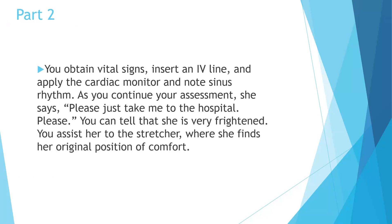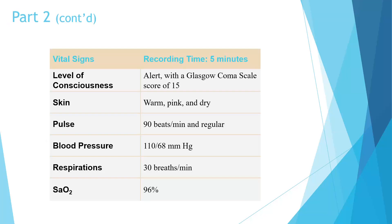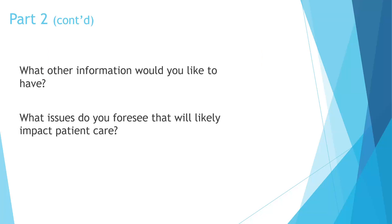We get vital signs, start an IV, apply the cardiac monitor. She's in a sinus rhythm and as you continue your assessment she says 'please just take me to the hospital' — you can tell she's very frightened. Assist her to the stretcher where she finds her position of comfort. Level of consciousness: alert, GCS of 15. Skin: warm, pink and dry. Pulse: 90 beats per minute and regular. Blood pressure: 110 over 68. Respirations are 30 per minute and SpO2 is 96%.